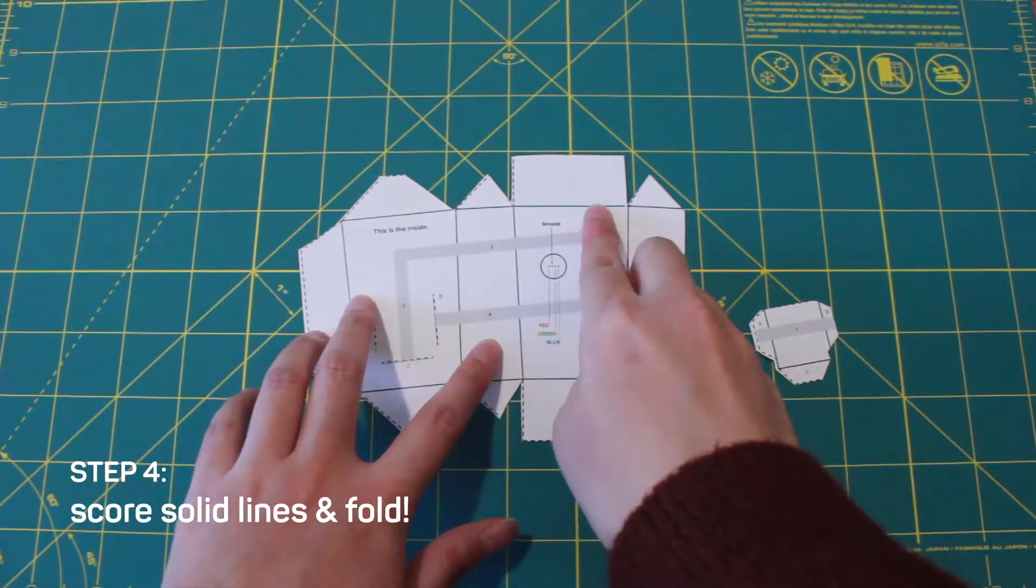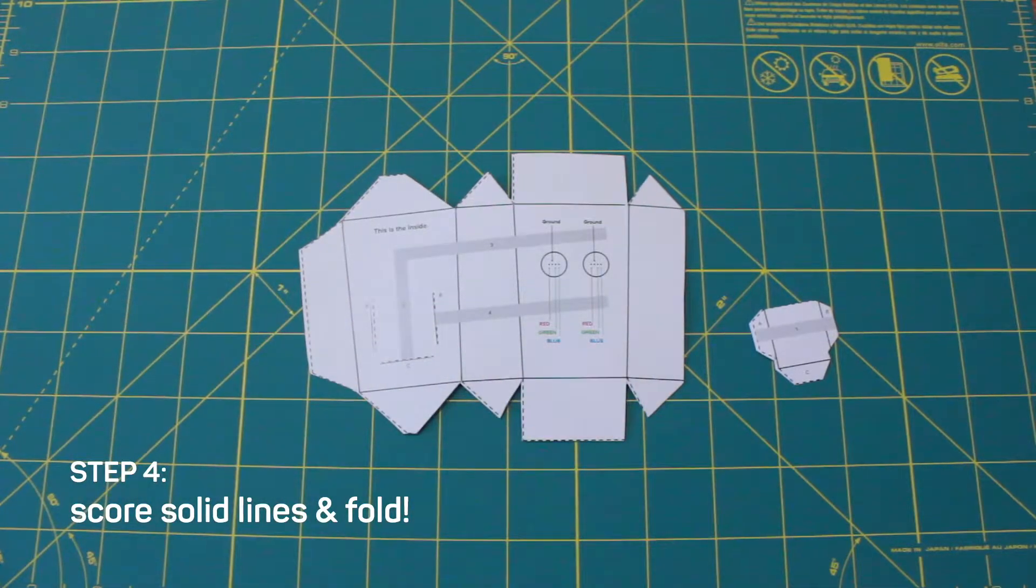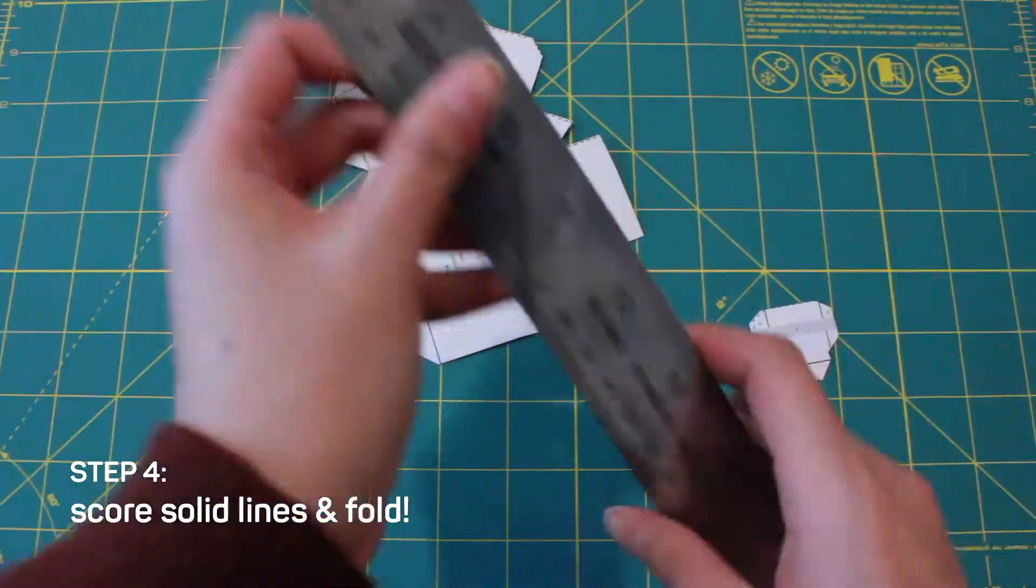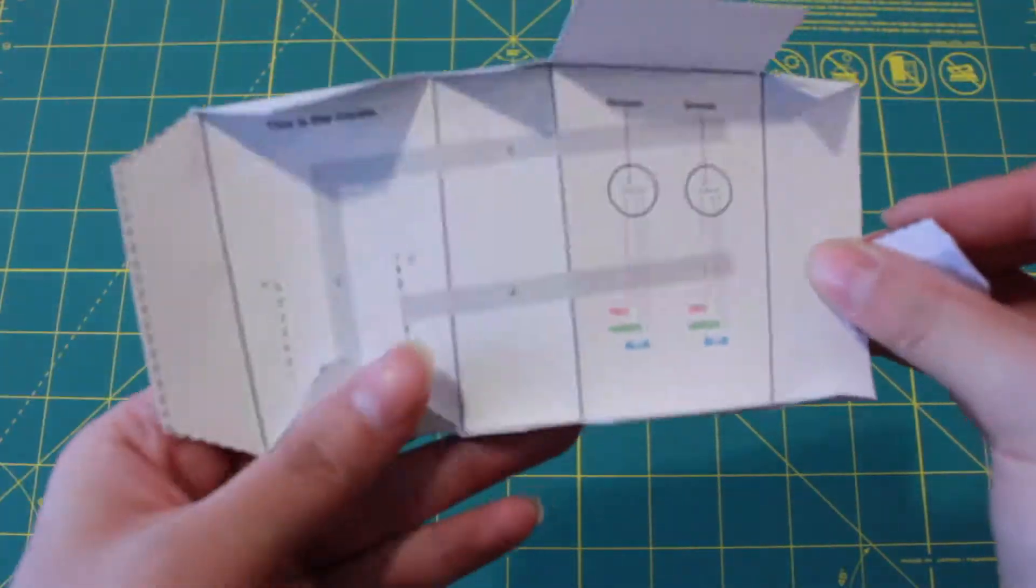Step four, you can also use your exacto knife to score the solid lines on your paper template. This makes it easier to fold up later. Just make sure that you don't cut all the way down. It should look like this after you've folded it.